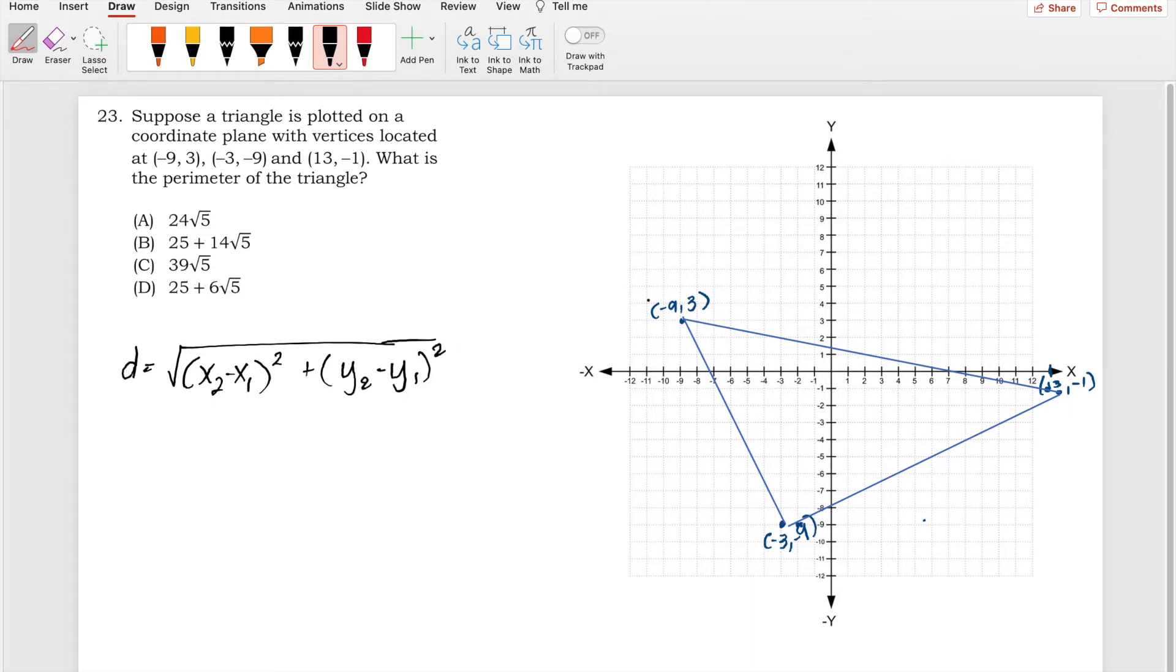Now let's solve for the distance, the side of this triangle, this part of a side. So we have here -9 minus 13 and -3 minus -1, quantity squared of both, and you add them.